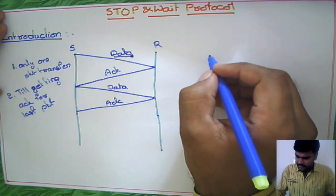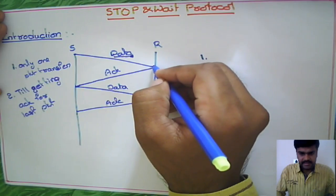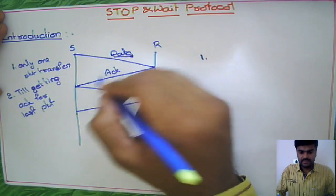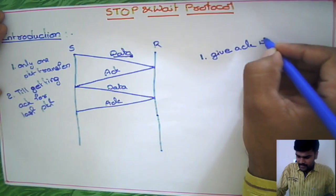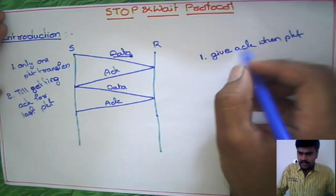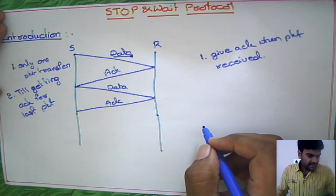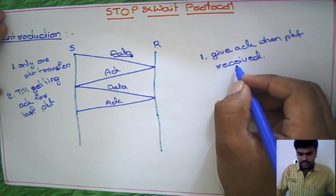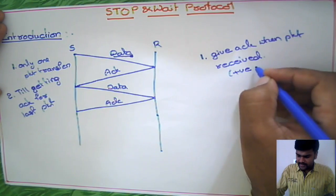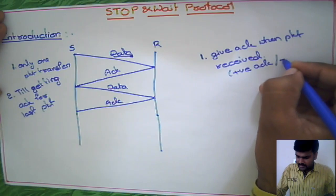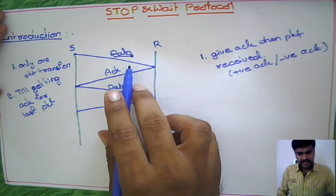On the receiver side, there are two more points. Whenever the receiver receives a packet, he has to give acknowledgement. He must give acknowledgement for the received packet — that may be a positive acknowledgement or a negative acknowledgement. Whatever the case, he has to respond to that packet.